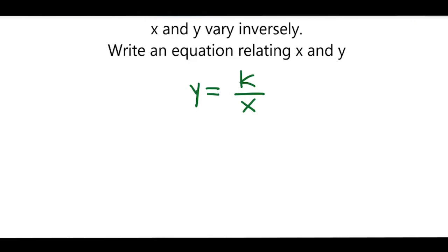When we are given that x equals 2 and y equals 4, we need to find the value of k. So we'll rewrite this as 4 equals k over 2.